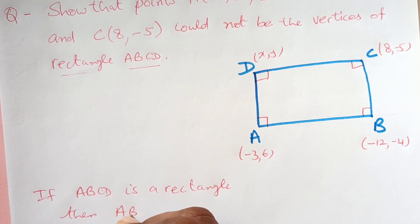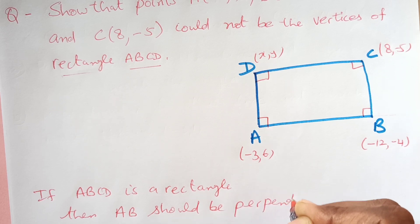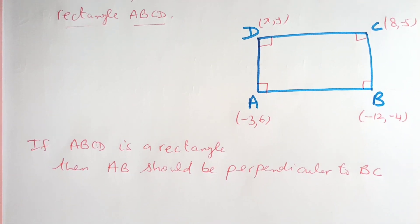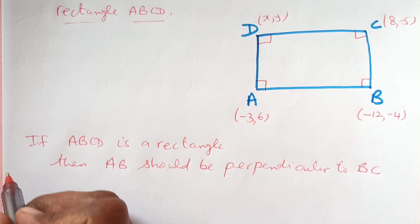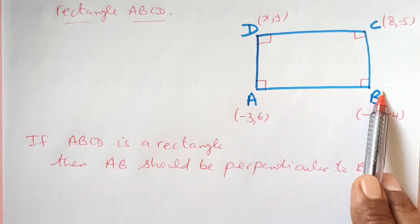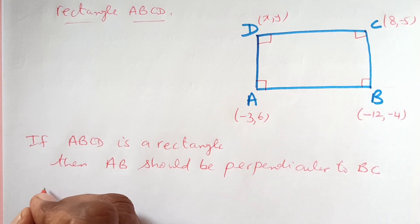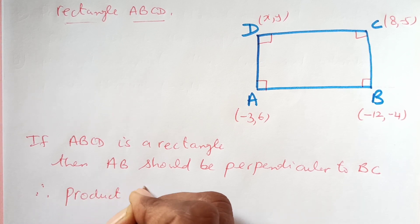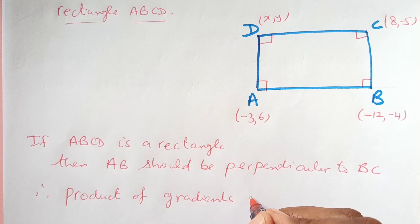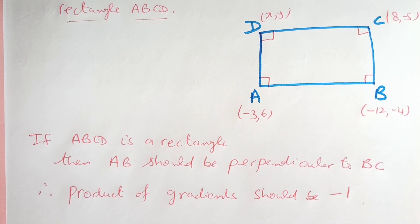If ABCD is a rectangle, then AB should be perpendicular to BC. This is how we relate the lines to the given question using the concept of perpendicular lines. If ABCD is a rectangle, these lines should be perpendicular, meaning that the product of their slopes should equal negative 1. Therefore, the product of gradients should be negative 1.